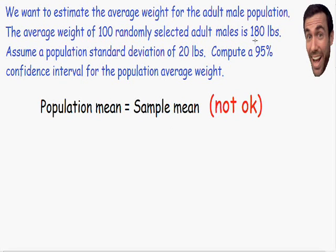It's not okay to assume that because our sample average is 180 pounds, the average of the population is also 180 pounds. This is because if we took the average weight of another 100 randomly selected adults, it could have been 175 pounds or it could be 185 pounds. So it is not okay to assume that the sample average is equal to the population average.